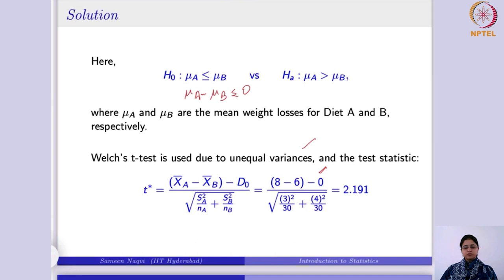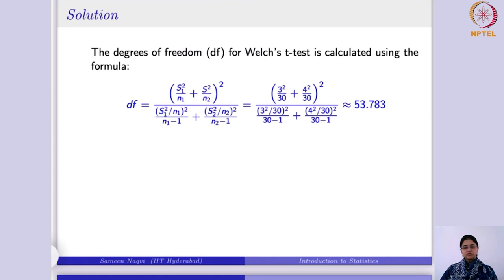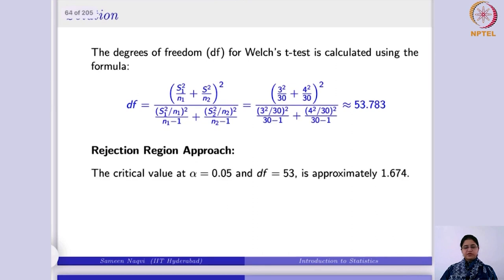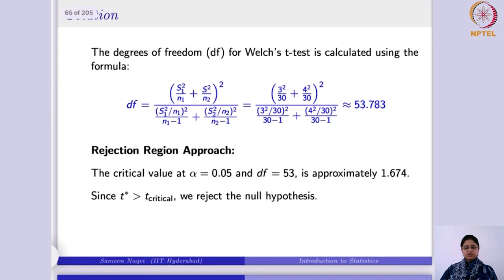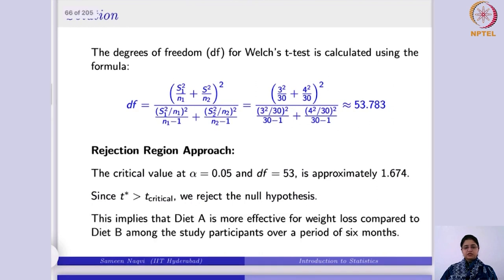We use Welch's t-test because the variances are unequal. Substituting the means (8 and 6), d₀ = 0, sample variances (9 and 16), and n₁ = n₂ = 30, the test statistic t* = 2.191. The degrees of freedom β̂ ≈ 53.783 ≈ 53. At α = 0.05 with 53 degrees of freedom, the critical value is approximately 1.674. Since t* = 2.191 > 1.674, we reject the null hypothesis.